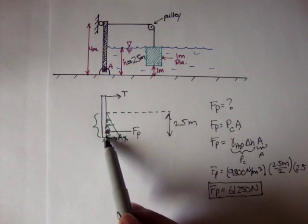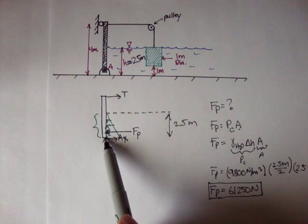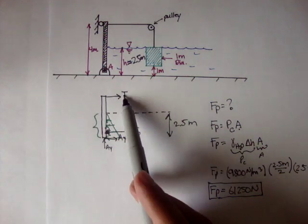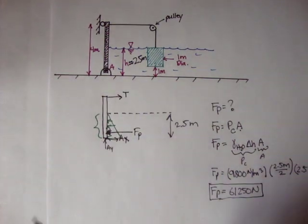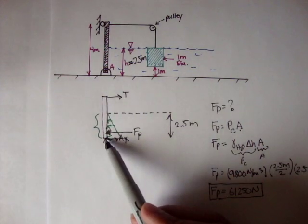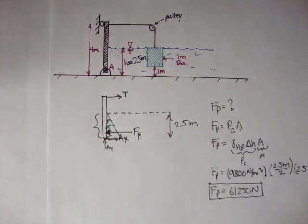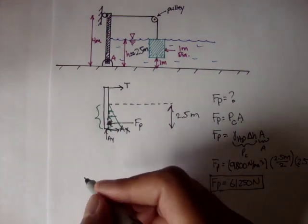We don't really know the tension yet. But, if we took the moment about A, we know Fp, we know T, we don't need to know Ay and Ax, because that's where we're taking the moment about. There's no distance from point A to point A, right? That doesn't make sense. So let's do that.